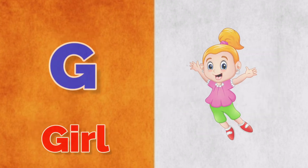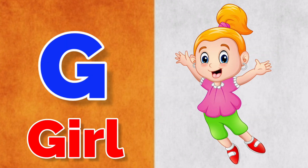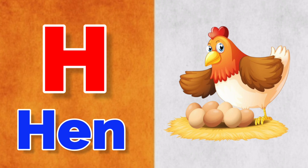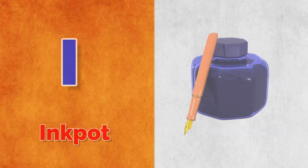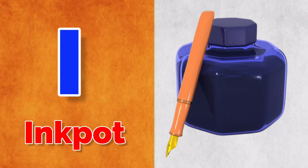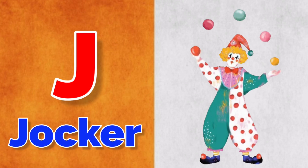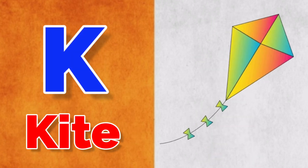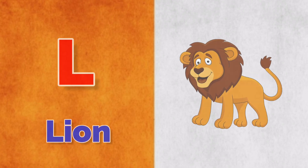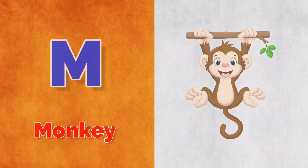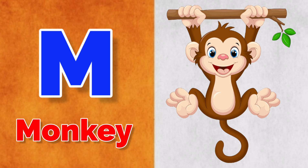G for girl, H for hand, I for import, J for joker, K for kite, L for lion.